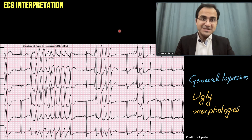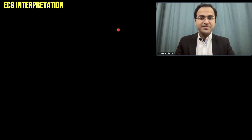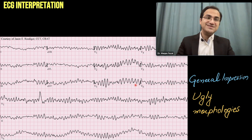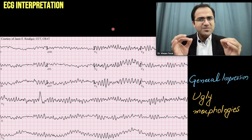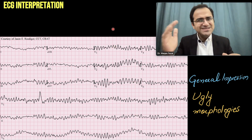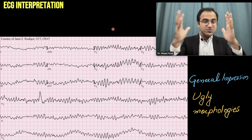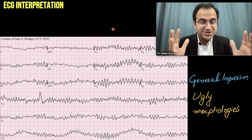Moving on to the next ECG: the first-glance impression about this ECG is that it is also showing ugly morphologies. So the first impression is very important. The first step in ECG interpretation is your general impression — whether it is very fast, very slow, or there are ugly morphologies present.